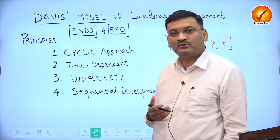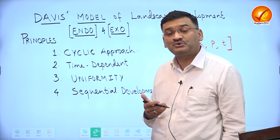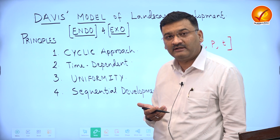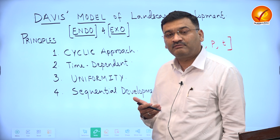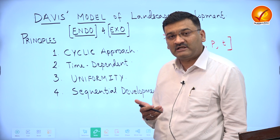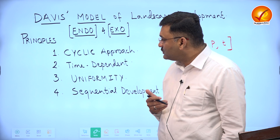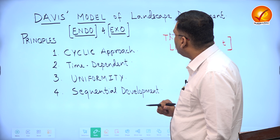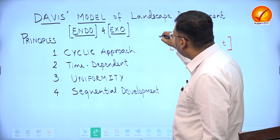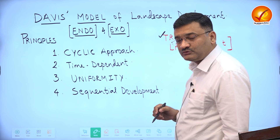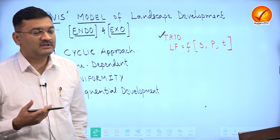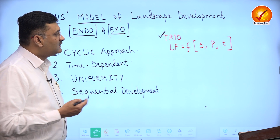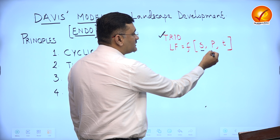The tendency of the exogenetic force is to degrade the landform — to reduce the relief and bring the landform closer and closer to the base level or sea level. The fundamental principle on which the Davisian model is based can be identified as a trio. Davis said that a landform is a function of structure, process, and time.